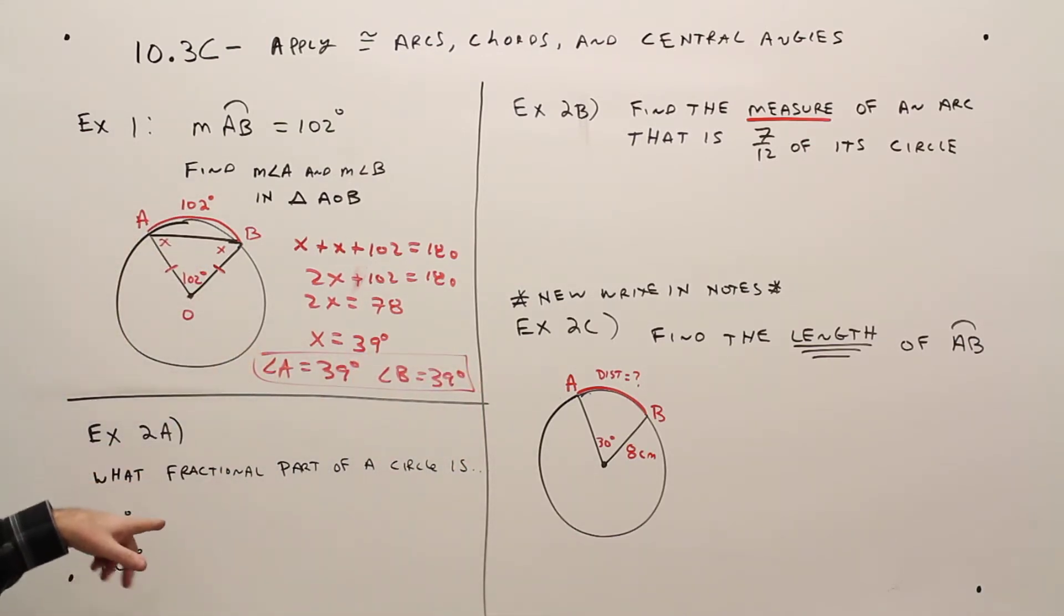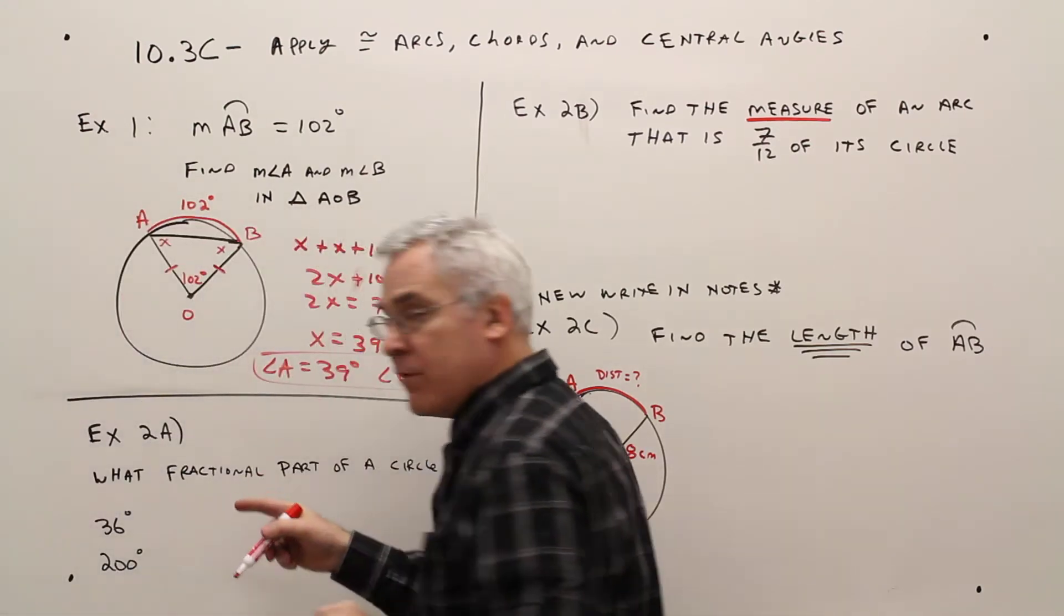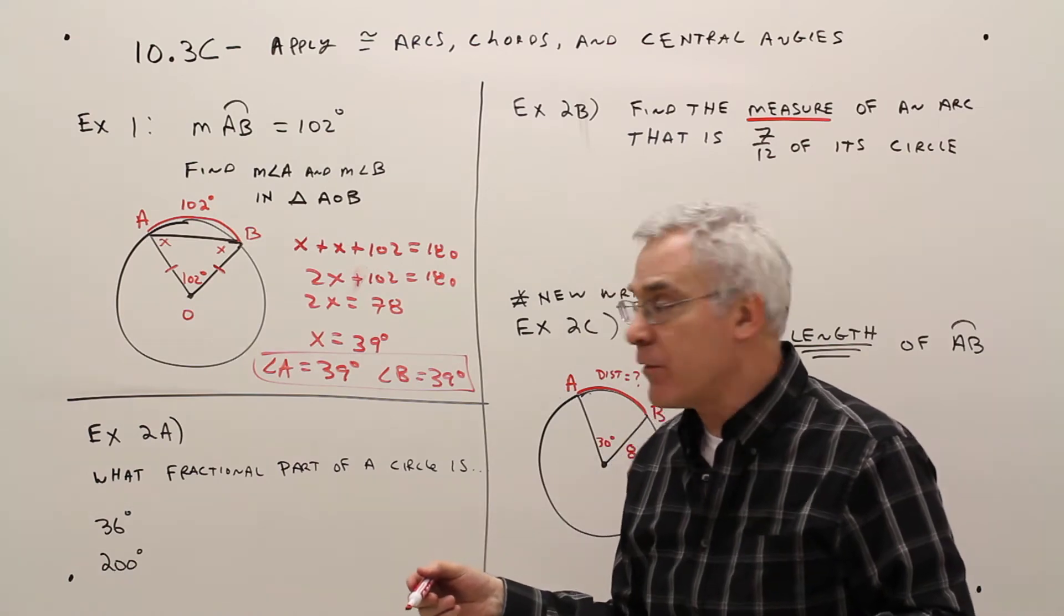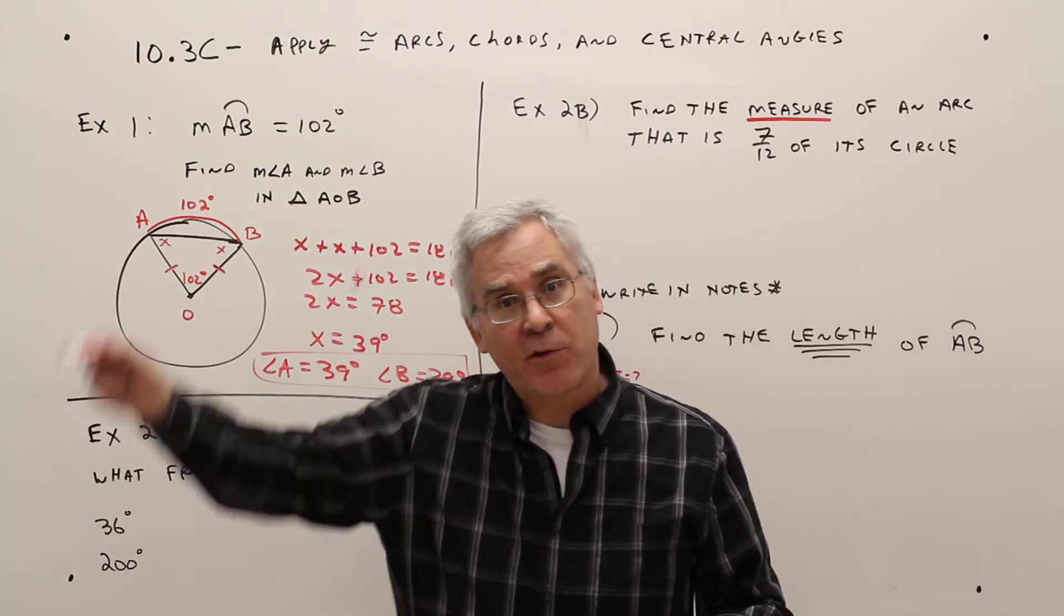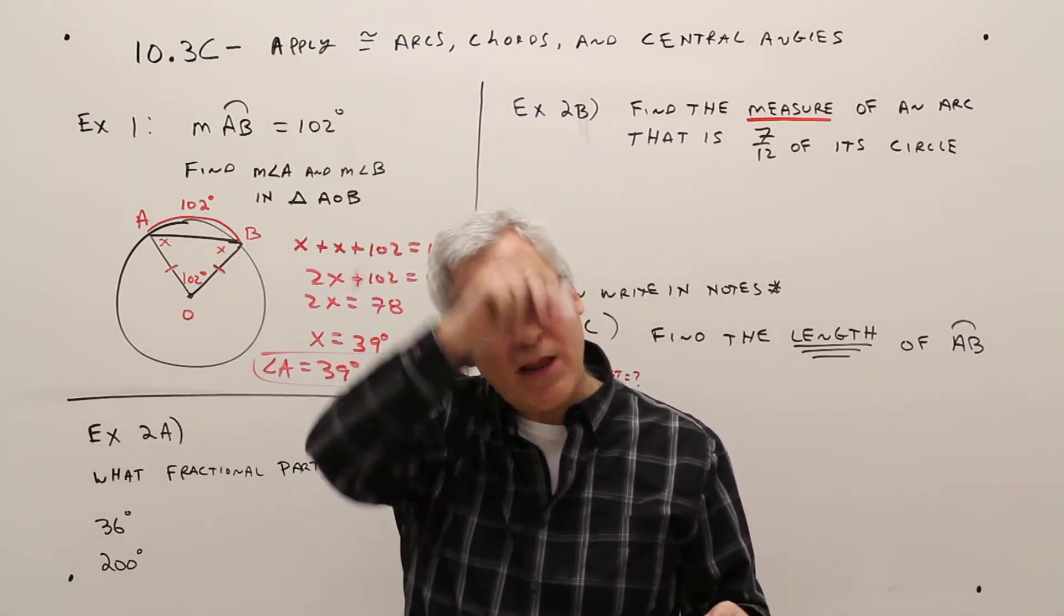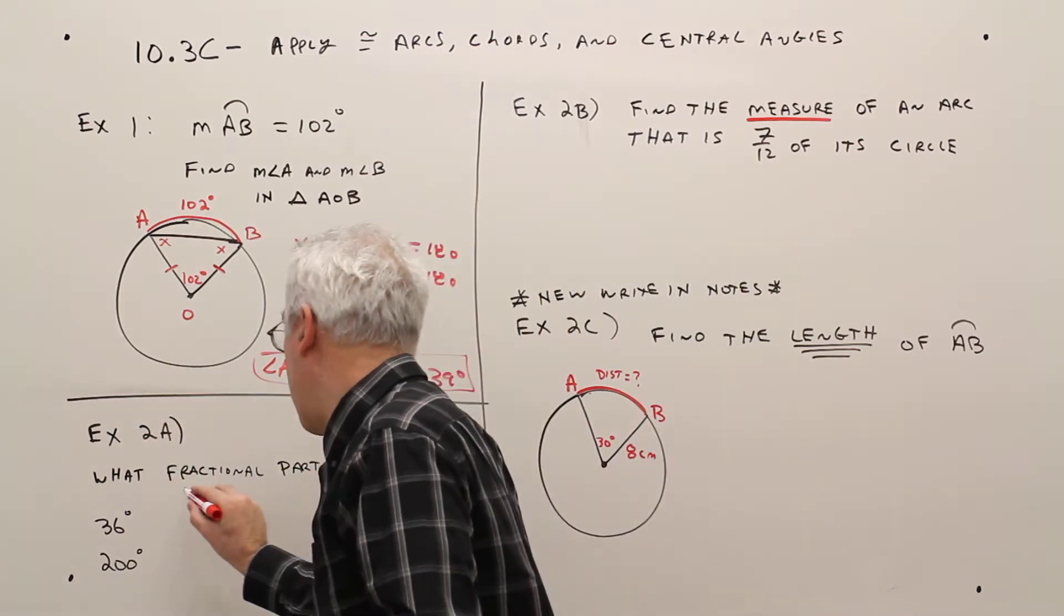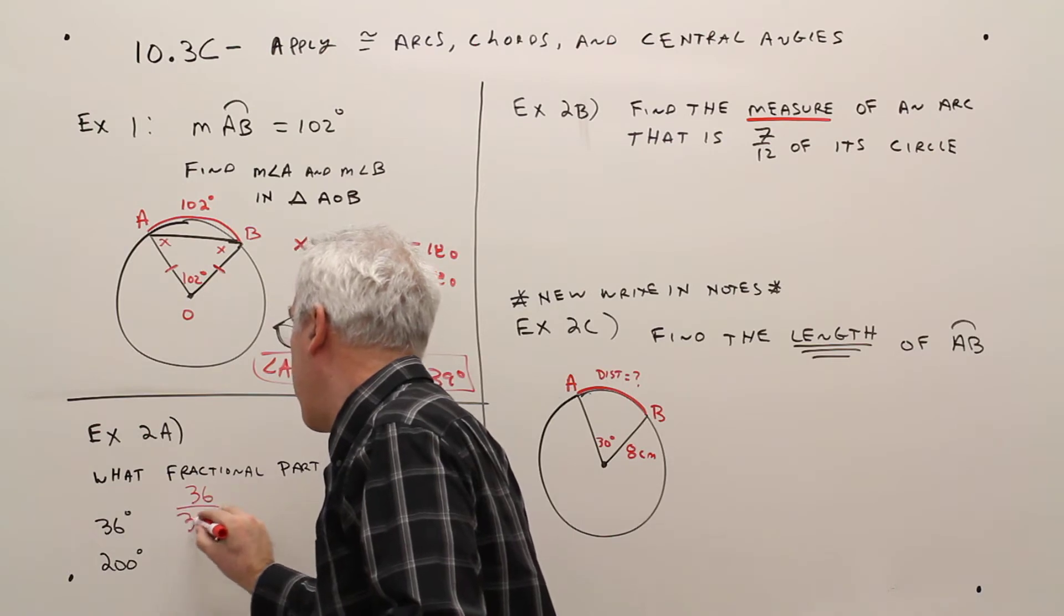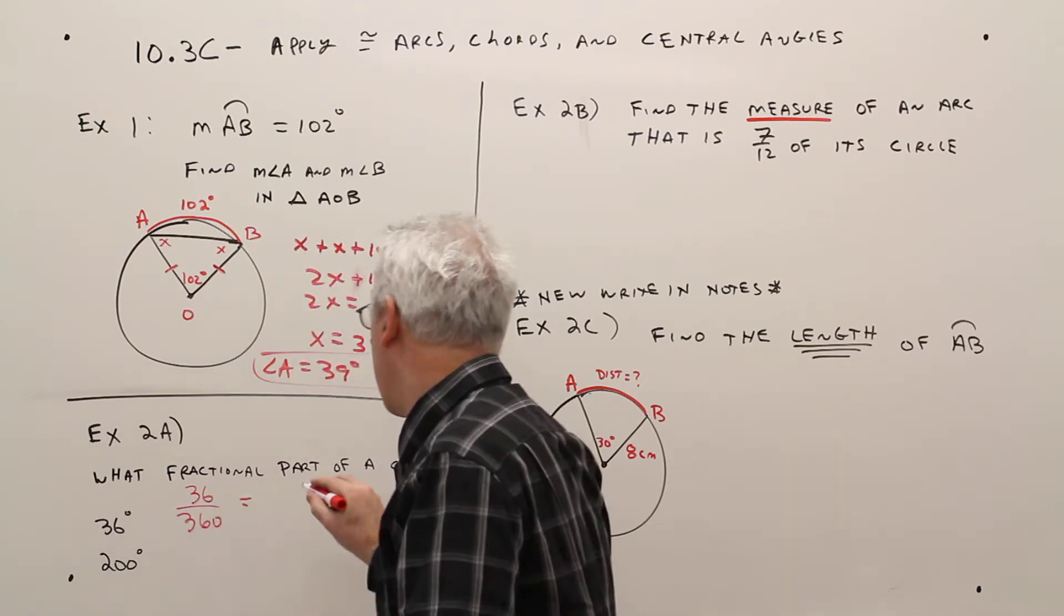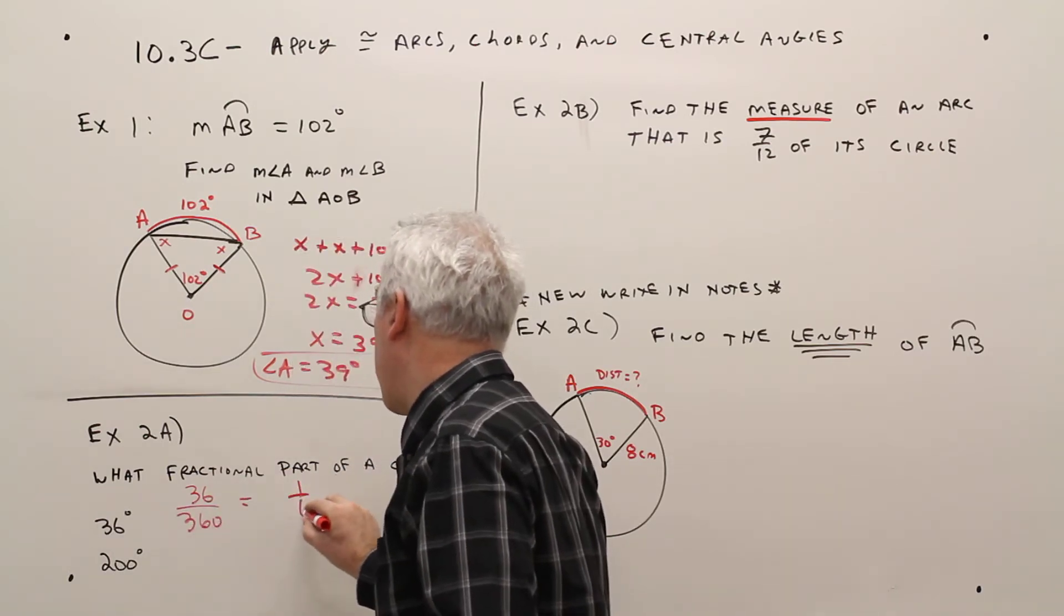Okay, example 2A. What fractional part of a circle is 36 degrees and then 200 degrees? All right, so all we have to know is that a circle has 360 degrees. And now we're just doing a ratio. So this would be 36 over 360. So that's going to be 1 tenth.